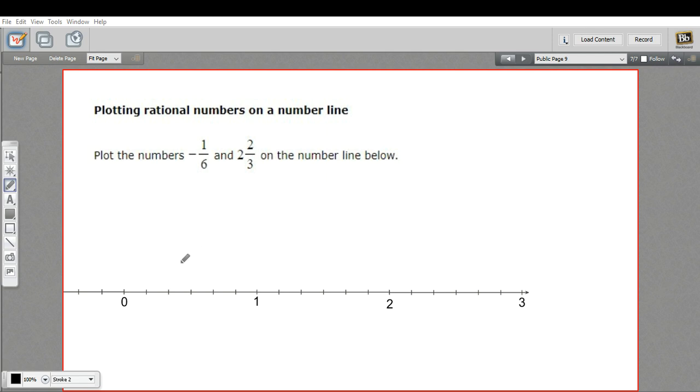The first thing to do is take a look at the number line and see what units these are divided into. I'm going to start at 0 and count up to 1. I've got 1, 2, 3, 4, 5, 6 units. So these are sixths.